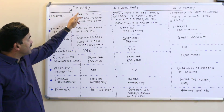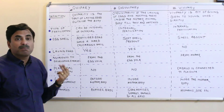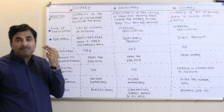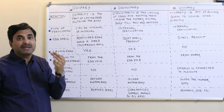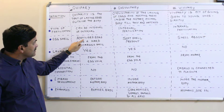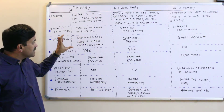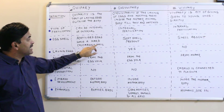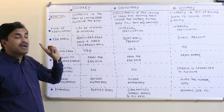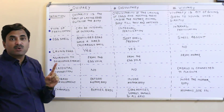Oviparous organisms lay eggs outside the body, so the eggs need protection from predators and the environment. Therefore, in oviparous organisms, the fertilized eggs are surrounded by a hard calcareous shell — a shell composed of calcium.